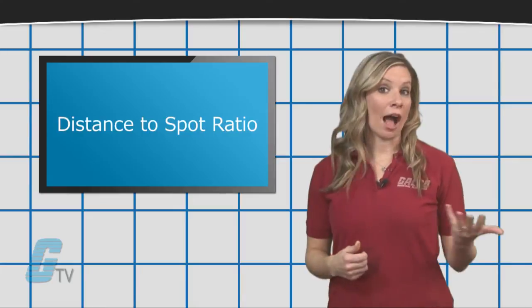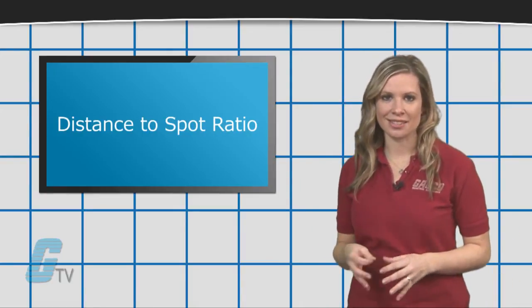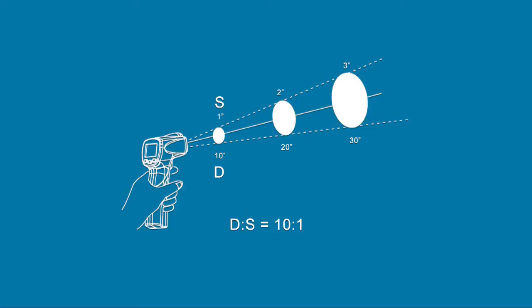The ratio determines how large a spot of area is measured at a given distance. A 10 to 1 ratio suggests that the device can measure one inch in diameter when the reading is taken from 10 inches away.